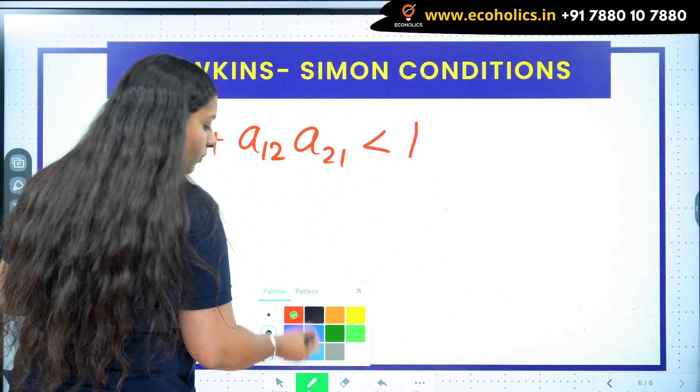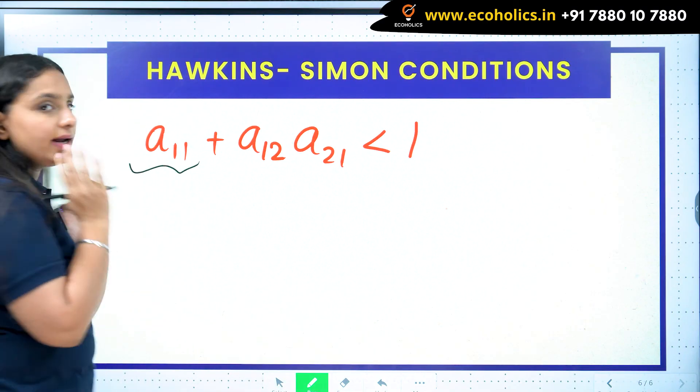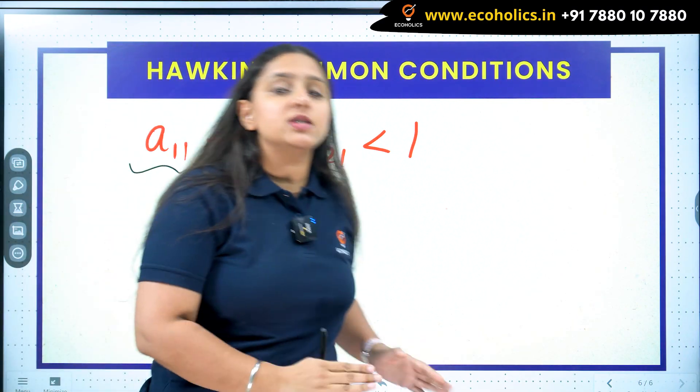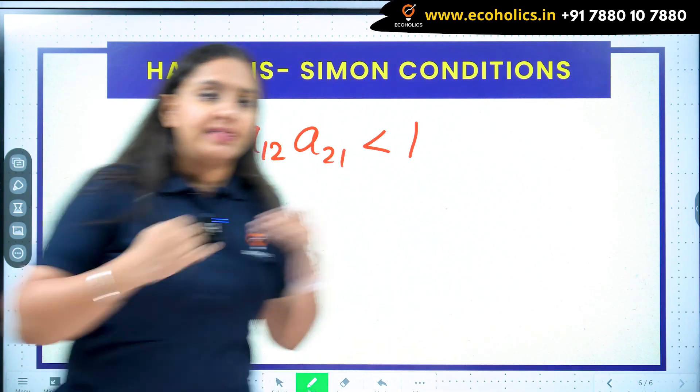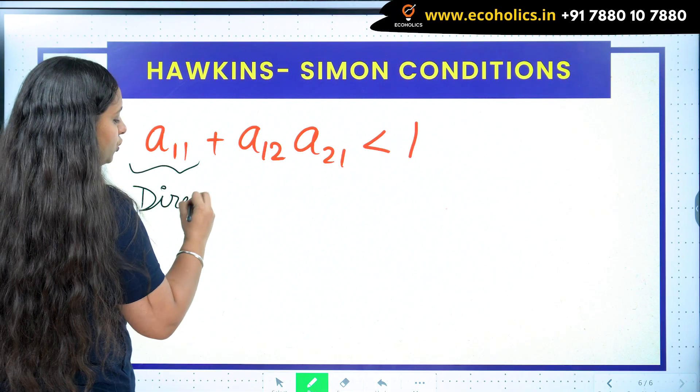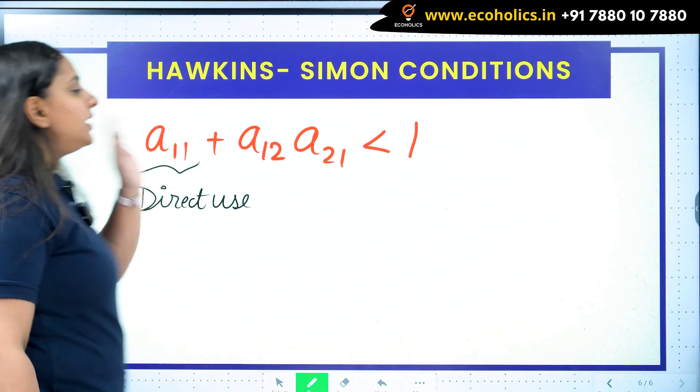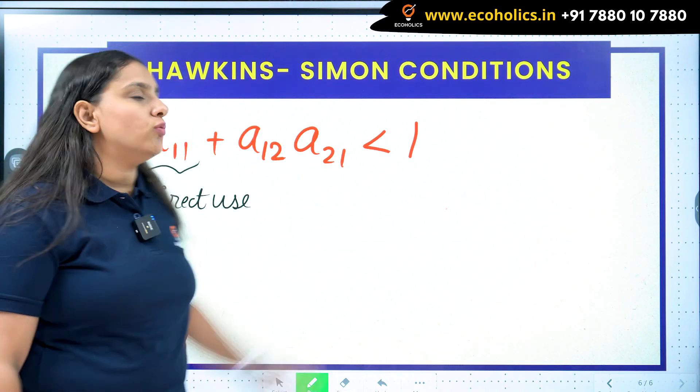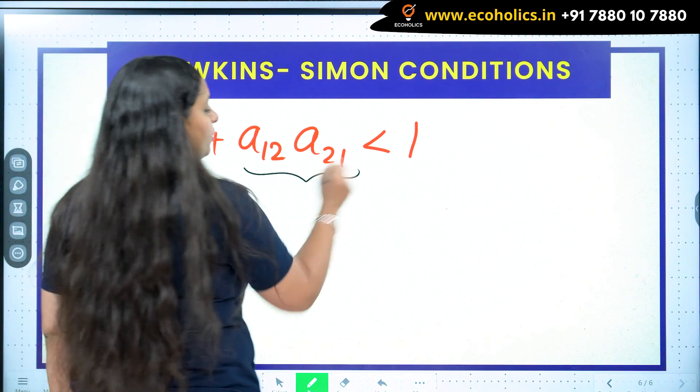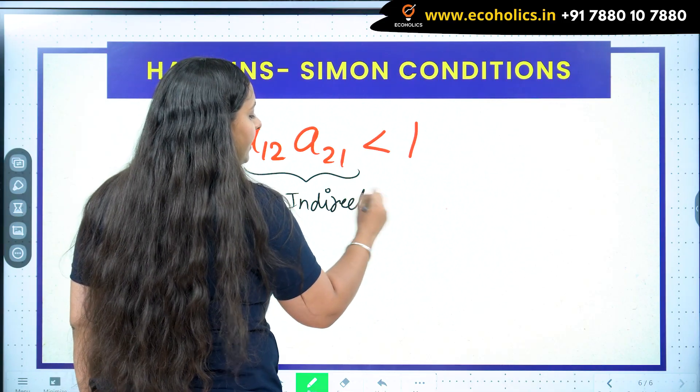It means that a_11 is the direct use of first industry's output by themselves as input. So this is the direct use of output as input. But when it comes to a_12 and a_21, what is this? This is the indirect use. Why is this known as indirect use?